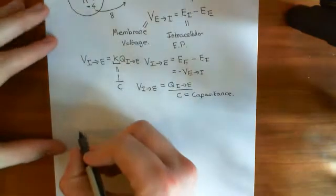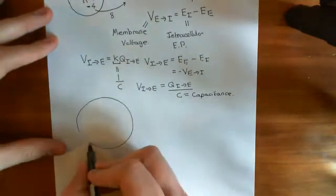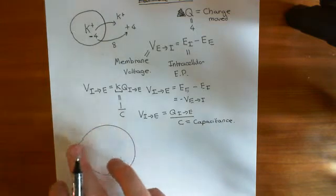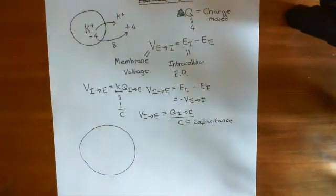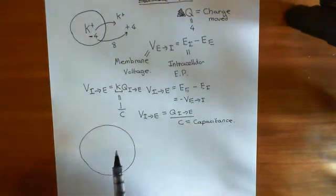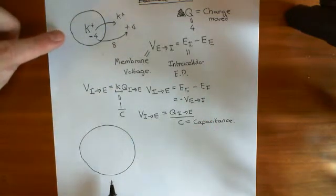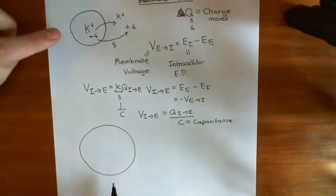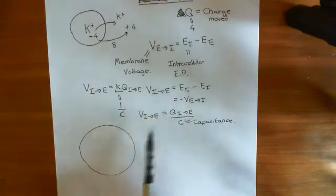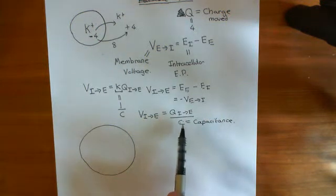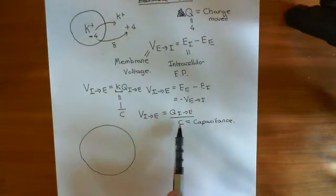If we have a bigger cell — we've gone from a small cell to this big cell — this big cell has a much bigger surface area cell membrane. Is this capacitance constant going to be greater in this case or this case? If we move a certain amount of charge across the membrane, we're going to get a certain voltage. And how big that voltage is depends on how big the capacitance is. The bigger the capacitance, the smaller the voltage you're going to get because you're dividing by a bigger number.